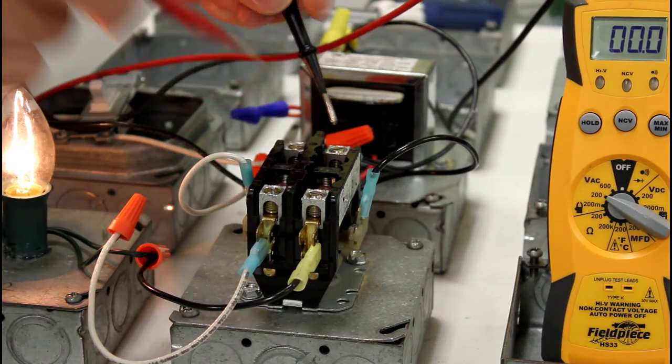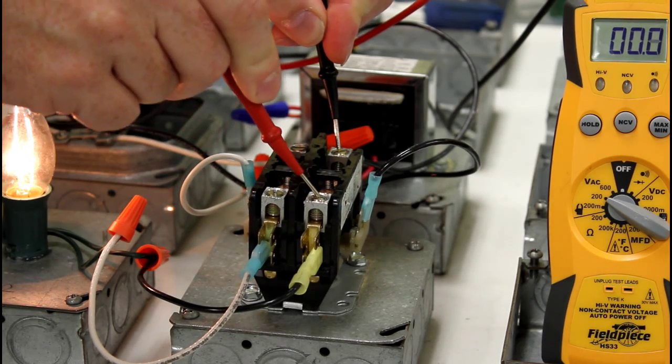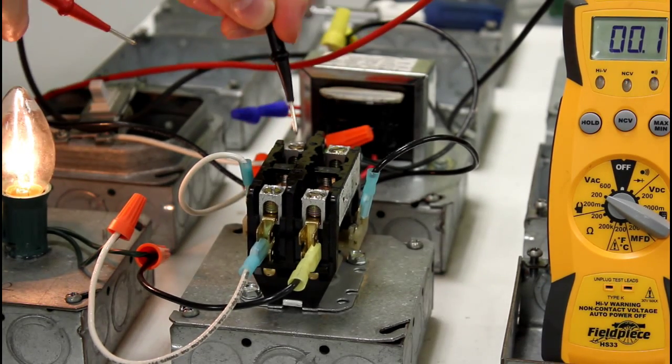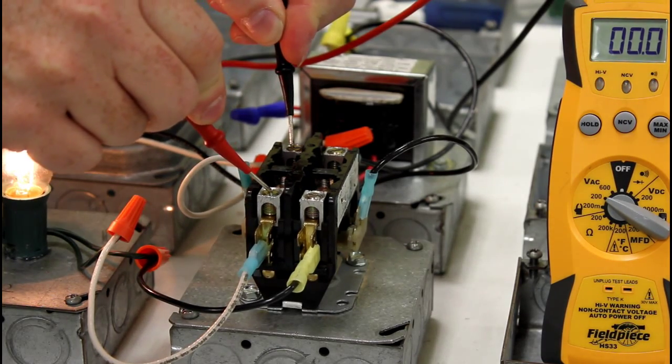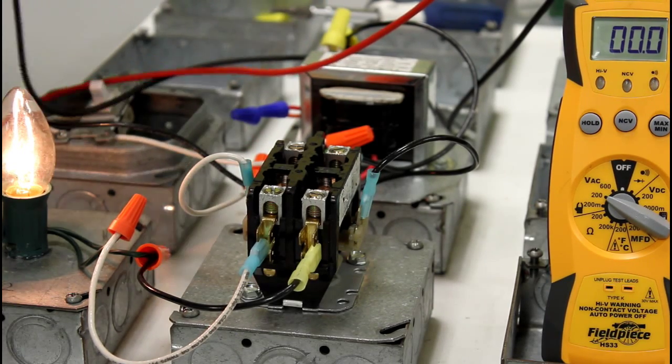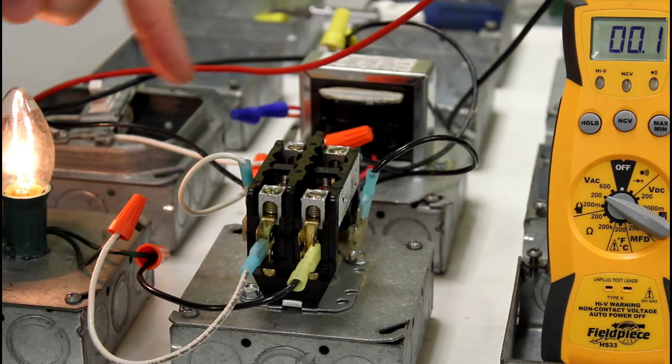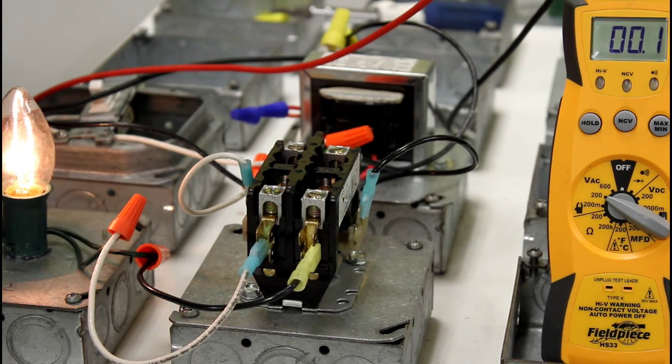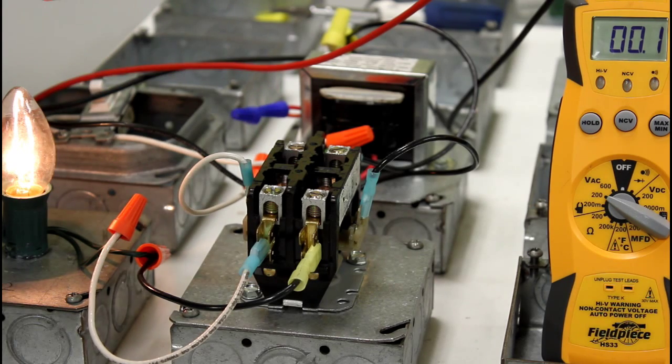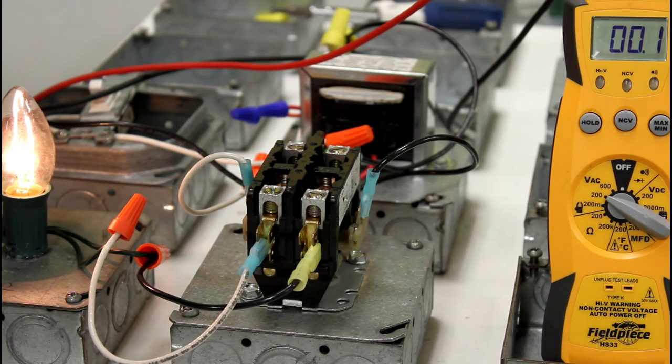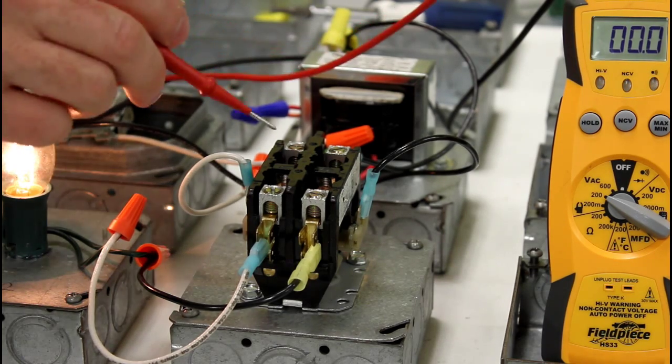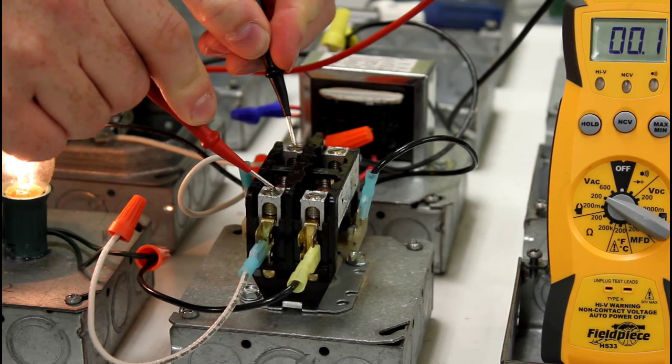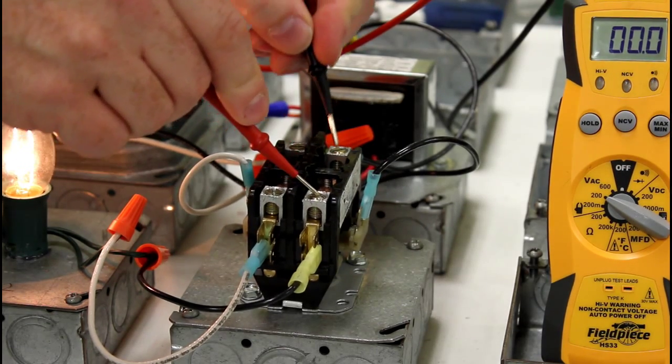Another check that we can do is check right across each contact. Here's contact number one. If I check from one side to the other, I should get zero volts, and I do. If I check on the other side on contact two from line to load, I also get zero volts. That's what I should have. Anytime you start getting a voltage drop across that contact, it means that it's pitted and needs to be replaced. Anytime you have more than about half a volt on high efficiency systems, you're going to need to change that out. On a normal system, if you get over about a volt, volt and a half, it's time to change these out. Right now you can see this one's in good shape. Got zero there, got zero there.